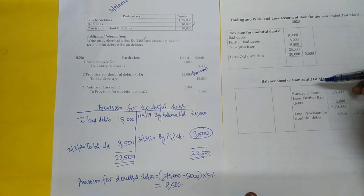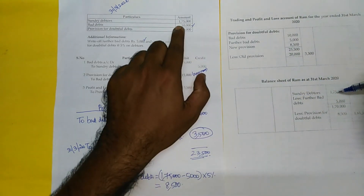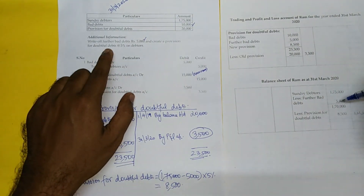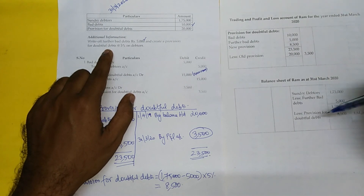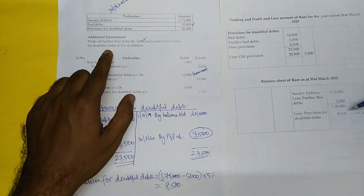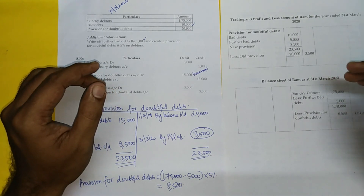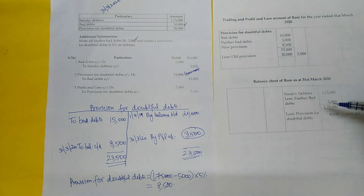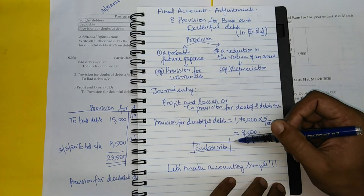Now the balance sheet extract shows debtors less provision for doubtful debts. We can present the balance sheet and P&L extract logically using the T-account approach. If you found this channel helpful, please leave a comment, subscribe to our channel, and press the bell icon. Let's make accounting simple!